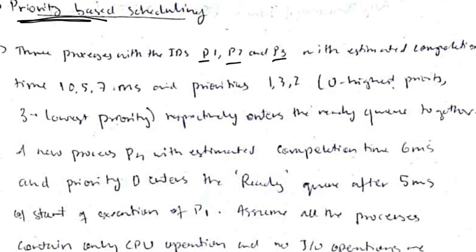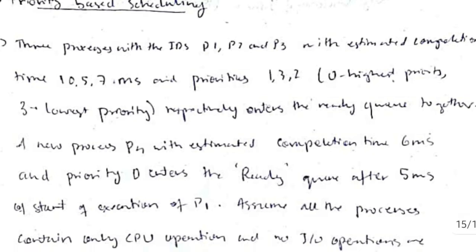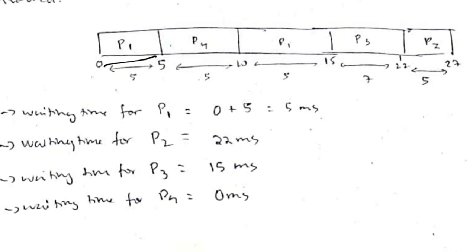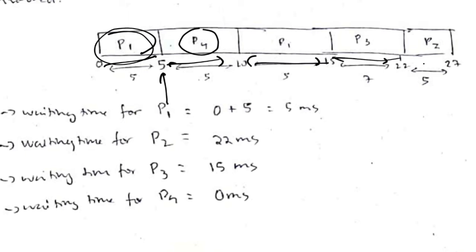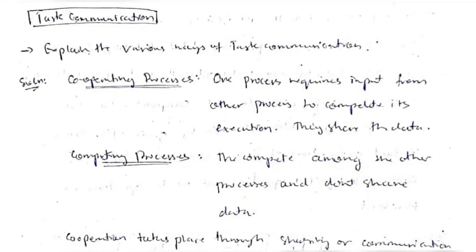Priority-based preemptive scheduling: P1 (10ms, priority 1), P2 (5ms, priority 3), P3 (7ms, priority 2) all arrive together. At 5ms, P4 arrives with priority 0 (higher than P1). Since it's preemptive, P1 stops and P4 executes. After P4 finishes, P1 resumes, then P3, then P2. Calculate average waiting time and turnaround time the same way. These are all the different types of scheduling algorithms.